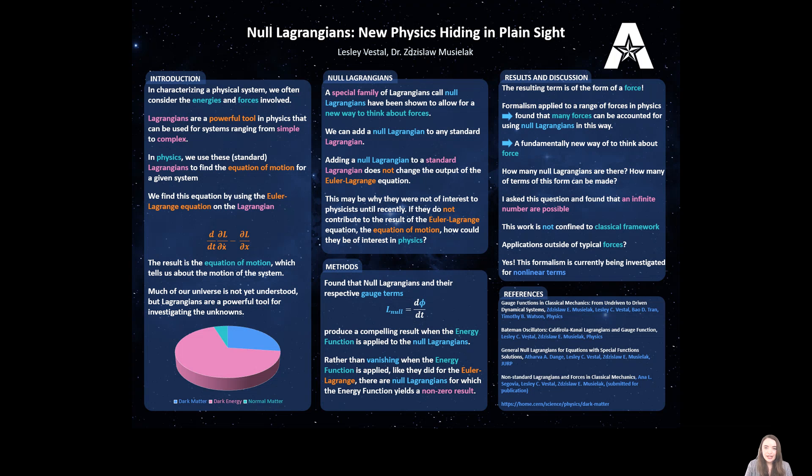Then I also started asking, how many of these are possible? How many null Lagrangians can you make that could possibly result in these force terms? I found that you can make an infinite number of null Lagrangians. I developed a formalism for doing this and a formalism for finding the resulting force terms, if they exist, from the null Lagrangians.